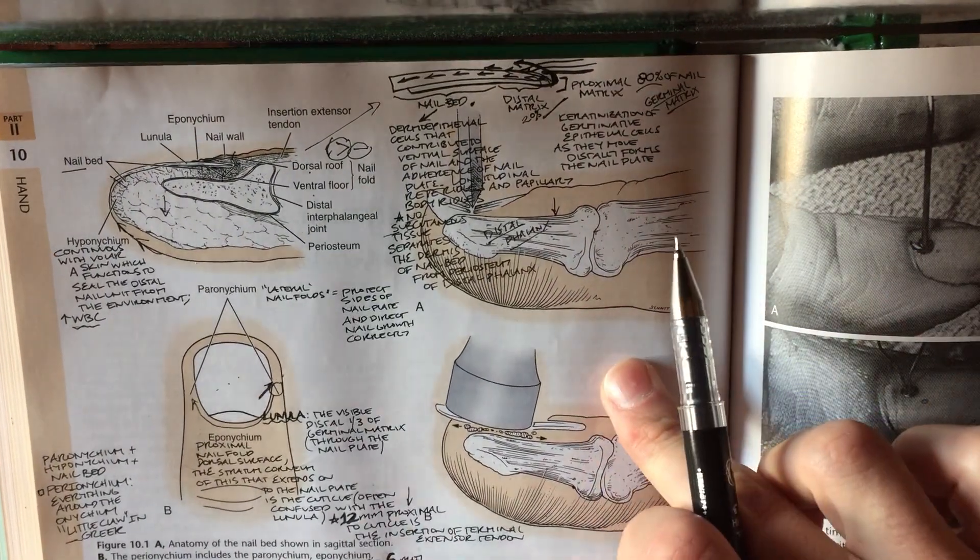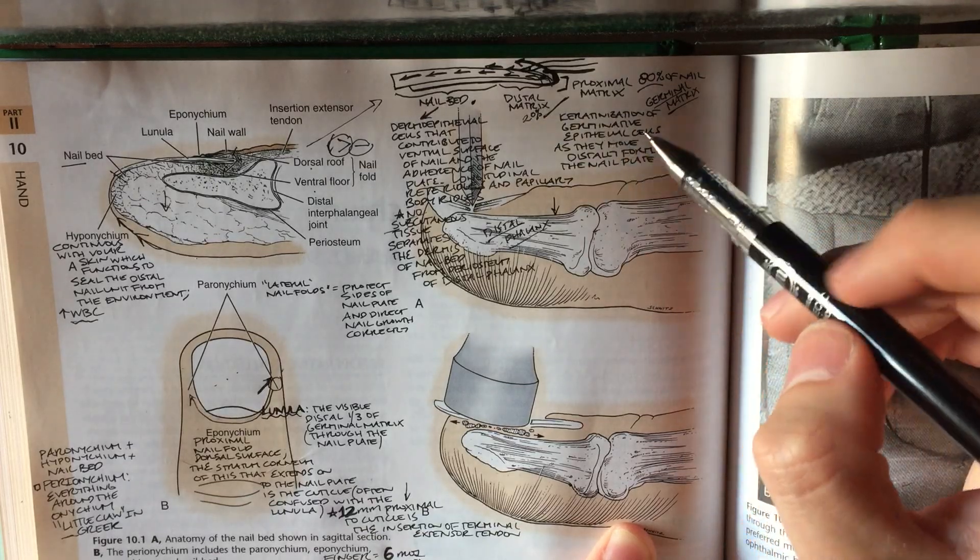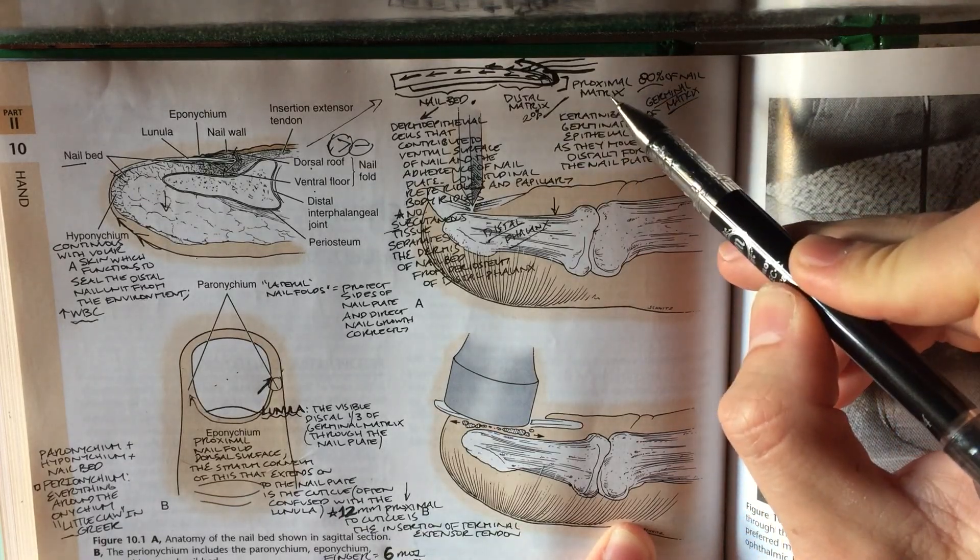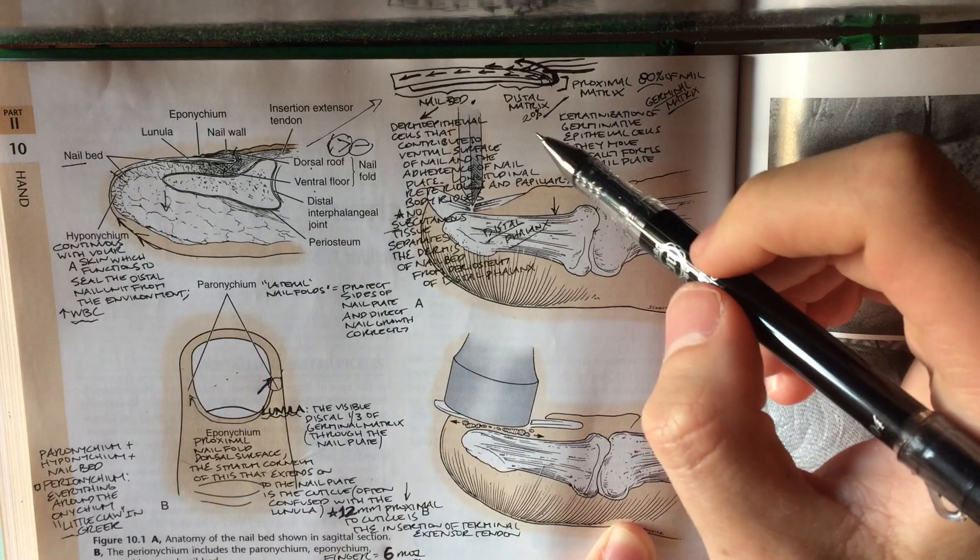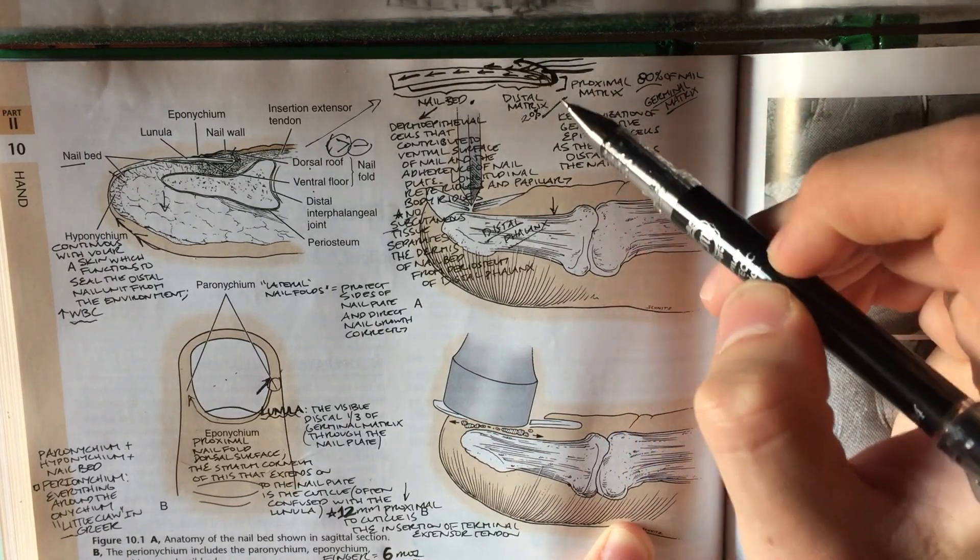Let's talk a little bit about the germinal matrix because that's important stuff, it's always on test. The germinal matrix actually has a proximal and distal matrix component where 80% of the proximal matrix is generating the actual nail plate. Notice how it grows in this nice, curvy fashion so your nails look super fancy.